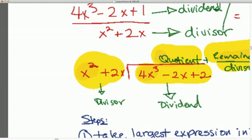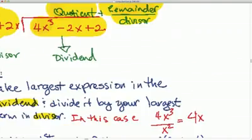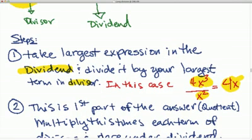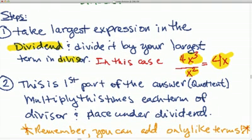To figure out what goes here in this first spot. And in this case, if you were to do that, you would have 4x cubed over x squared, which if you use your exponent rules, you'd get 4x. If you're not familiar with the exponent rules, now would be a good time to go back and review.